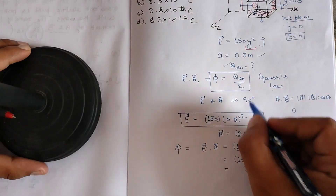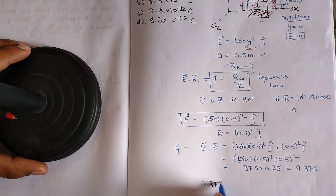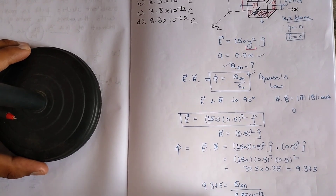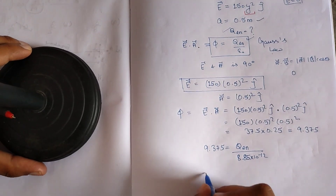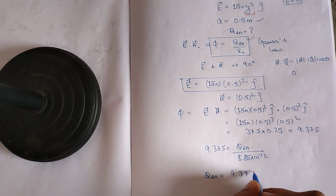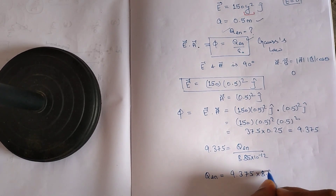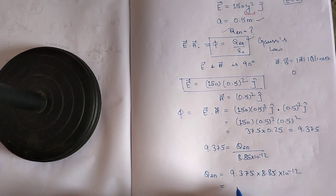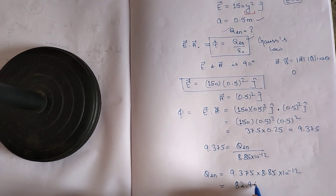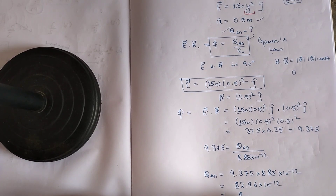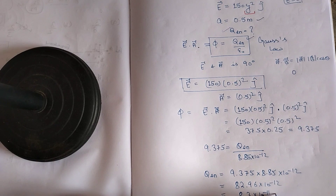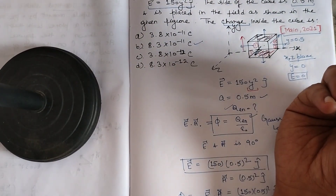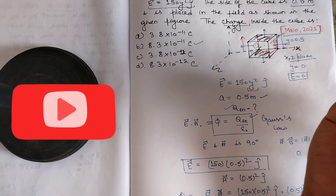Now we apply Gauss's law: flux = q_enclosed / ε₀. So 9.375 = q_enclosed / (8.85×10⁻¹²). Therefore, the charge enclosed = 9.375 × 8.85×10⁻¹² ≈ 82.96×10⁻¹² C, which rounds to approximately 8.296×10⁻¹¹ coulombs. Checking the options, this corresponds to option B, which is the correct answer. That's all for this video, thank you.